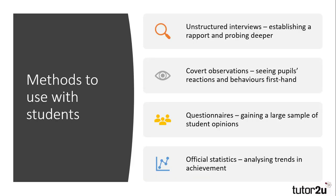There are some methods that have been used more when researching students than others. Archer used unstructured interviews in her various pieces of research, which allowed her to develop a rapport with students and get more information on issues such as identity, labelling and the impacts of setting and streaming. Covert and overt non-participant observations are useful methods for seeing the behaviours of pupils first hand. However, there are ethical issues with covert observations, and overt observations could be limited by the Hawthorne effect. Questionnaires are another method that can be used. Sullivan used questionnaires when investigating students' cultural capital. However, they may require further research to understand the meanings and motivations of actions, so they could best be used in conjunction with other methods.